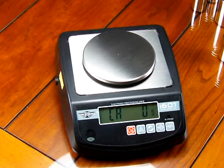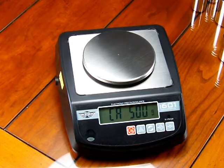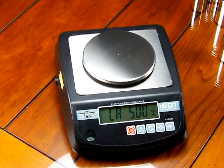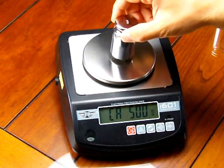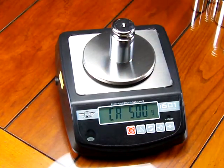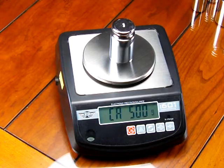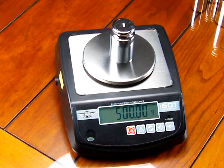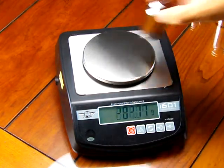And so the scale reads Cal zero and it stored that value with nothing on the platform. Now it is looking for 500 grams. So I am going to put my 500 gram weight on the scale. And now the scale beeps 500 saying that it's accepted it.